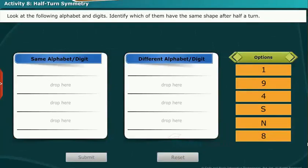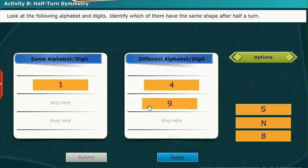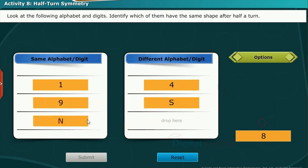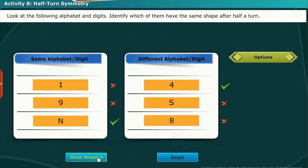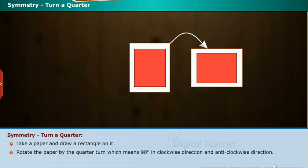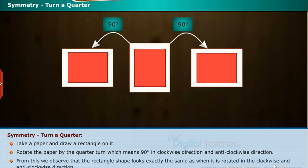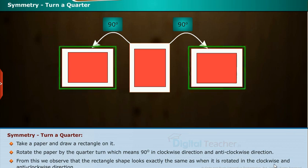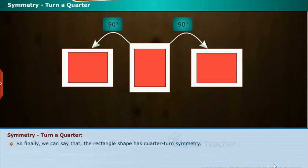Look at the following alphabets and digits and identify which of them have the same shape after half a turn. For quarter-turn symmetry, take a paper and draw a rectangle on it. Rotate the paper by a quarter turn — that is 90 degrees — in the clockwise and anticlockwise directions. We observe that the rectangle shape looks exactly the same when rotated, so we can say that the rectangle has quarter-turn symmetry.